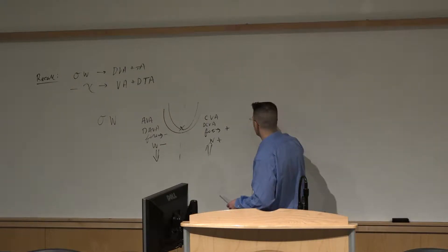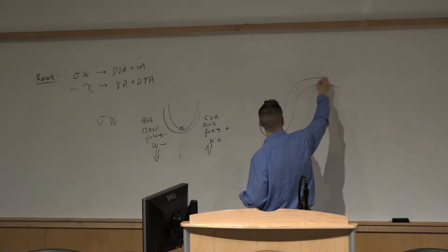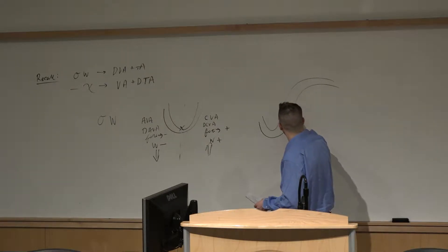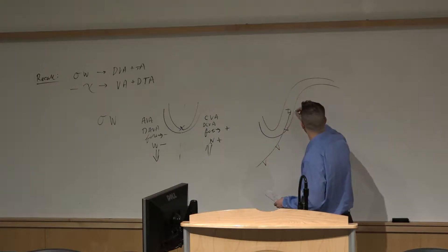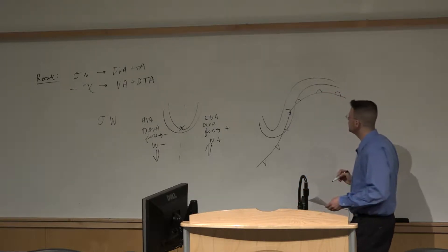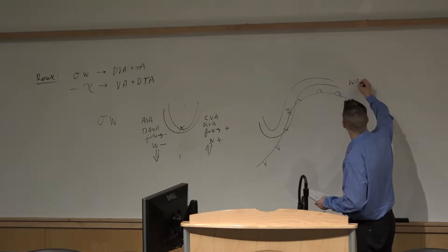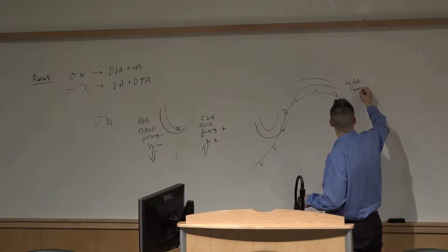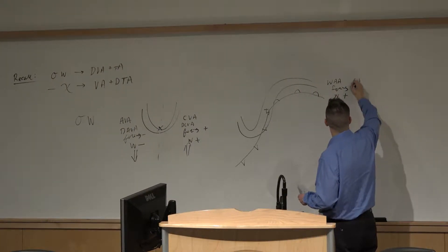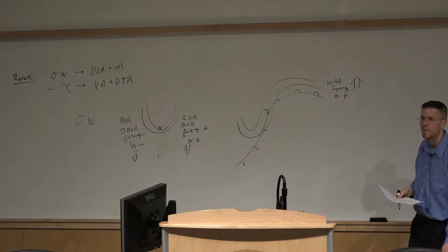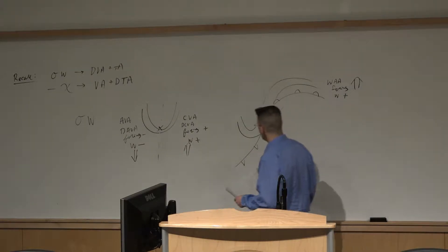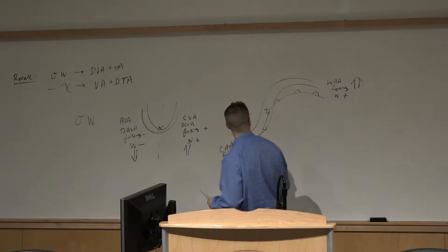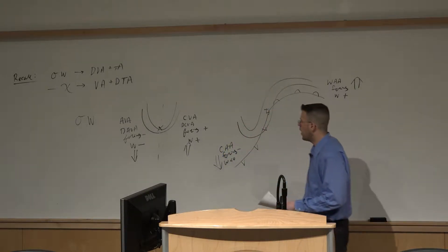Now let's apply this quasi-geostrophic omega equation to an example involving a front and consider the effects of forcing from thermal advection. We'll have a surface low positioned between a shortwave trough and the ridge downstream, a cold front trailing southwestward from the surface low, and a warm front arching to the northeast and east of the surface low. In the case of warm advection occurring to the north of the warm front, that corresponds to positive thermal advection forcing, so W is positive — upward motion, lift occurring in association with warm advection. Behind the cold front we have cold advection, the forcing is negative, and W will be less than zero — subsidence occurring in the cold advection regime behind the cold front.